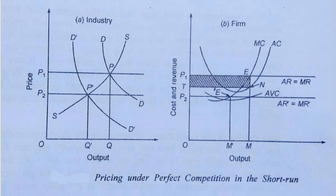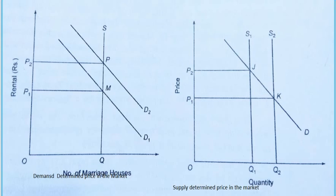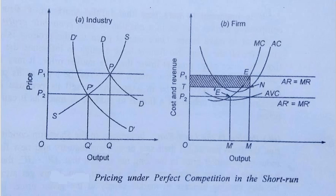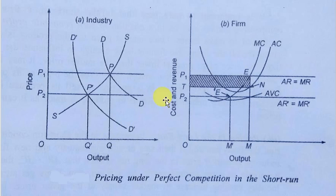Now we will discuss the short run. Unlike the market period where supply is fixed, in the short run firms can change the scale of production. Existing firms may quit, or new firms can enter into the industry. There is a possibility to increase or decrease supply, so we see some price changes in the short run.